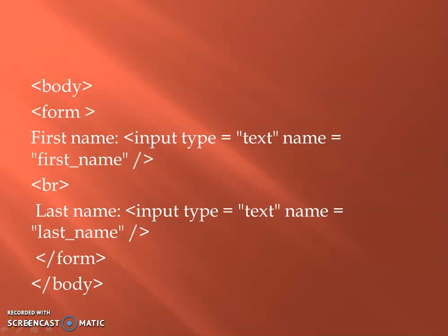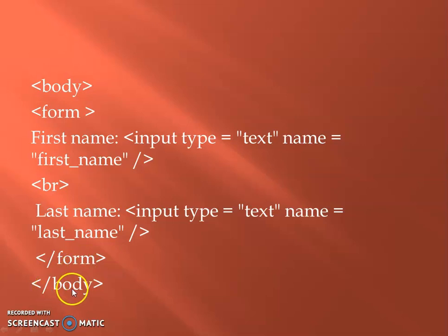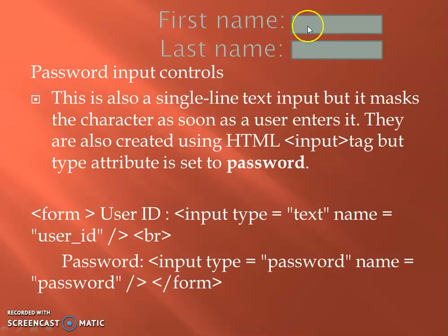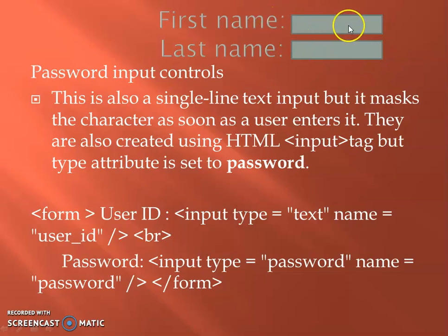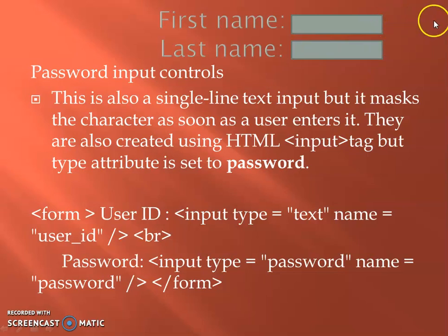We have completed it in 15 minutes. Now, input type equal to text, name equal to last name, then form tag close and body tag close. For example, input type first name: text box, and last name: text box. If you have a line breaker, you can see the last name.